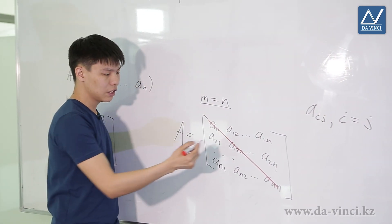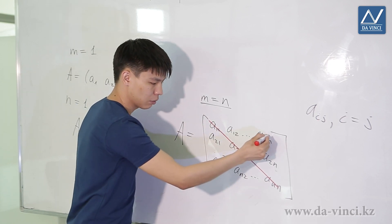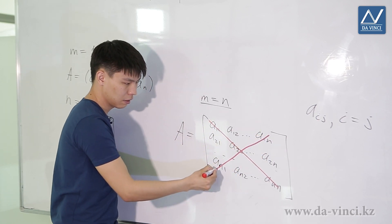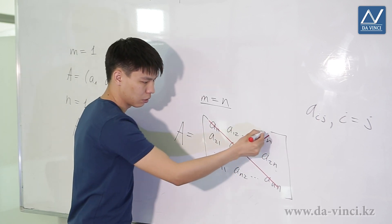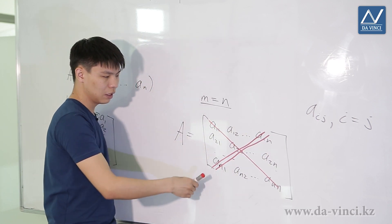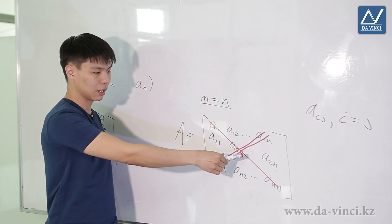There is also the concept of a secondary diagonal — this is the other diagonal of the square matrix.